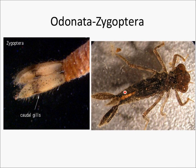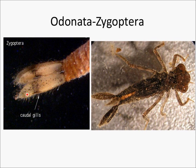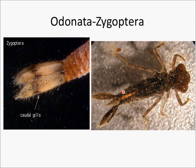Here we see the larva of the Zygoptera, or damselflies. In contrast to the dragonflies, damselfly gills are attached permanently outside at the tail end of the body and are often confused for tails.